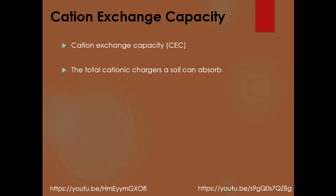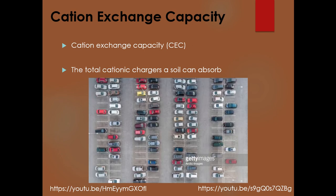Cation exchange capacity is the total cation exchange charges a soil can absorb. A helpful analogy is a parking lot: the smaller the parking lot, the lower the CEC and the decreased ability to fit cars — where the cars represent cations. A parking lot only one aisle wide represents a low CEC and low ability to hold cations. A large parking lot four aisles wide represents a higher CEC and a higher ability to store cations. There are also two YouTube videos linked here that help explain this idea.